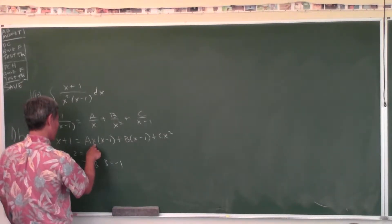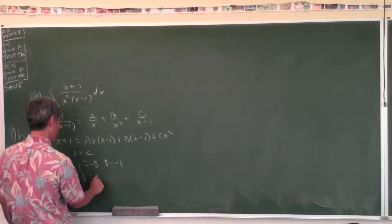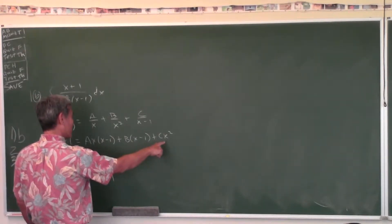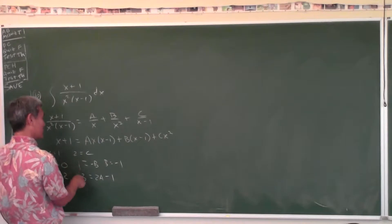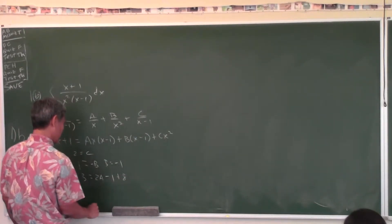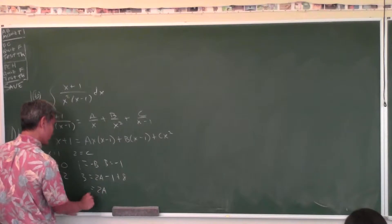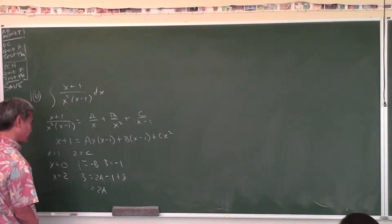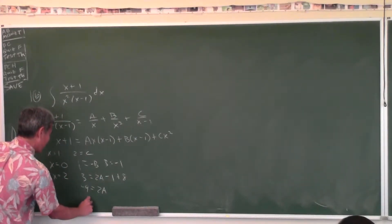Plugging in X equals 2: 3 equals 2 times 1 times A — that's 2A — plus B (which is negative 1), plus 4C (which is 4 times 2 equals 8). So 2A equals negative 4, therefore A equals negative 2.